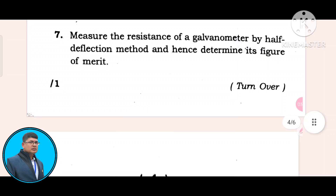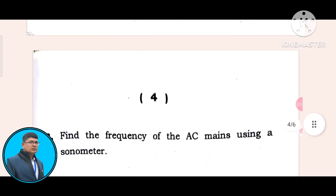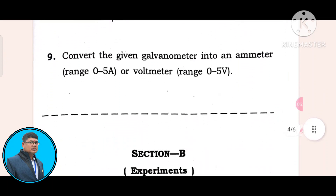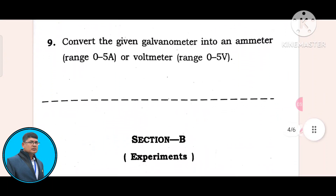Question seven: Measure the resistance of a galvanometer by the half-deflection method and hence determine its figure of merit. Question eight: Find the frequency of AC mains using a sonometer. Question nine: Convert the given galvanometer into an ammeter of range 0–5 A, or a voltmeter of range 0–5 V. This is Section A.